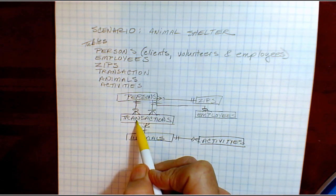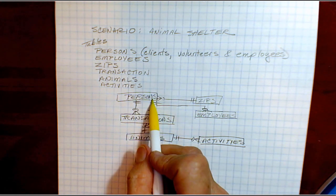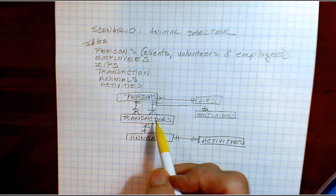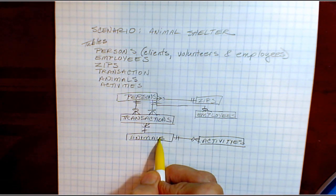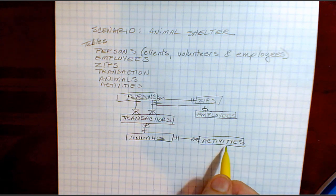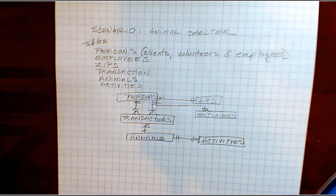Persons are involved in transactions bringing an animal in and taking an animal home. Some persons are employees. A transaction is for a particular animal. An animal may have more than one activity. Be sure and take a look at the database videos related to this APEX video so that you fully understand what's going on, especially if you haven't worked with relational databases before. Some of the concepts are critical.